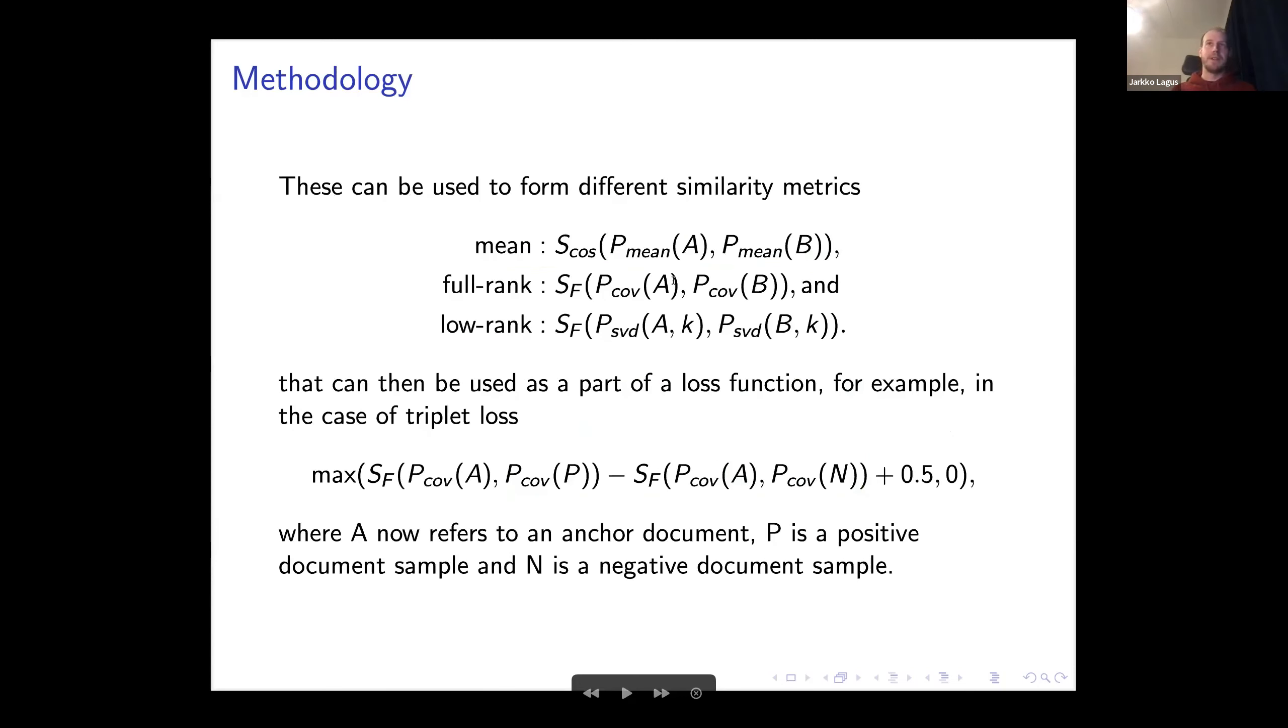Once we have defined this way of representation and this metric, we can form these similarity metrics similarly to the previous presentation. For mean, we have just mean pooling, and for full rank second-order matrix, we have these covariance representations and the low rank versions of those covariance representations.